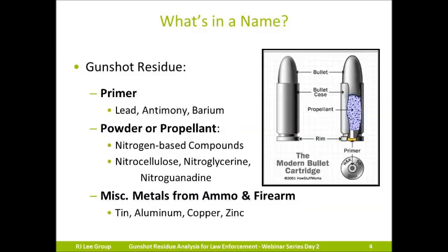There are many components to gunshot residue. If you look at the picture of the cartridge on the right, you can see where all the particles that make up gunshot residue originate from. At the very bottom, you have the primer cap. Inside the primer cap is the primer paste, which is typically composed of lead, antimony, and barium — the elements that we look for when analyzing gunshot residue. This is a center fire primer cap; depending on the cartridge, you could also see a rim fire. Next to the primer, you can see the propellant or powder, which is composed of nitrogen-based compounds including nitrocellulose and nitroglycerin.